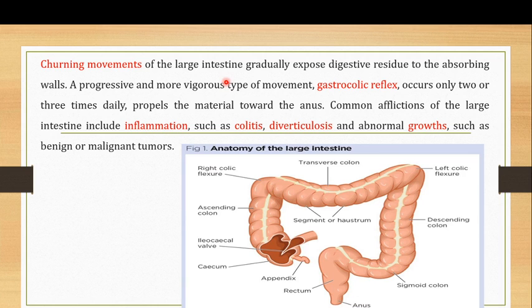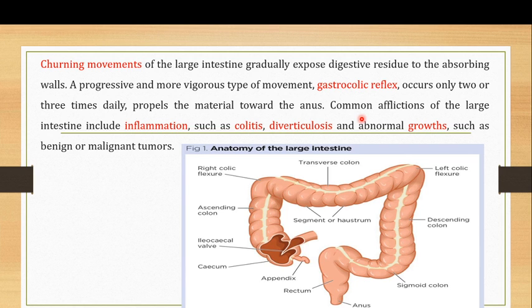The churning movements of the large intestine gradually expose the digestive residues to the absorbing walls, where water and electrolytes are reabsorbed into the body for use in different functions. A more progressive and vigorous type of movement known as the gastrocolic reflex occurs only two or three times a day, propelling waste material towards the anus.